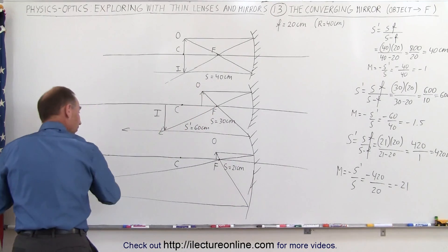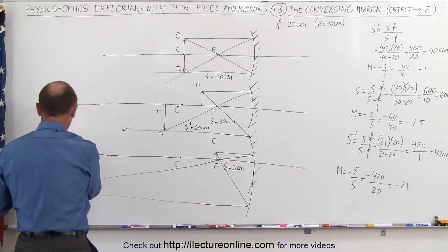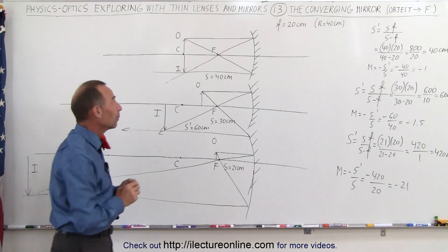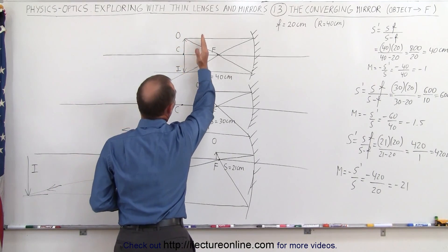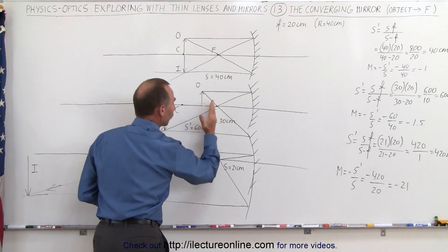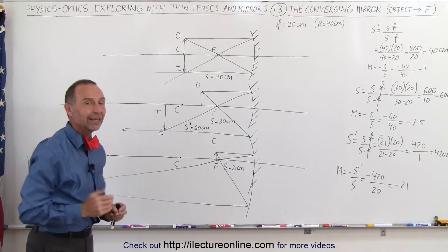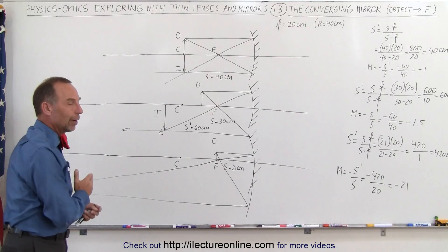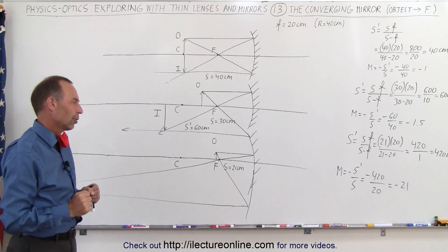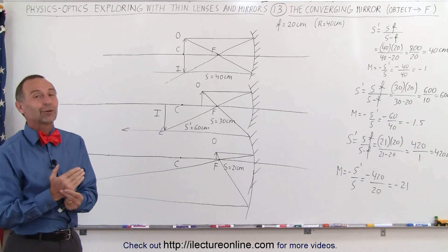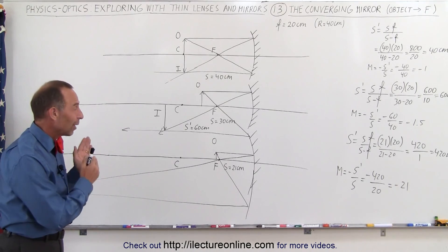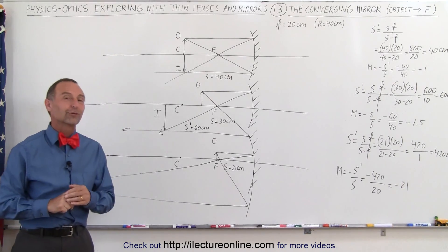So we have a real image very far away at 420 centimeters, and the image is 21 times the size of the original object. As we put the object closer and closer to the focal point, the image moves farther and farther away. As we approach the focal point, the image tends to go out to infinity, becoming infinitely large and infinitely far away. In the limit, as the object reaches the focal point, if you place it exactly there, you really can't find the image because it would be infinitely far away and infinitely large.